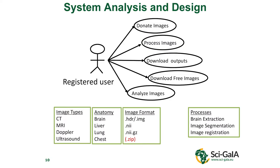Now about the system analysis and design — this gives a summary of what MIPA does using a use case diagram. You can donate images, process images, download outputs of processed images, download images for free, and analyze your images. The target image types include CT scan, MRI data, and Doppler ultrasound.